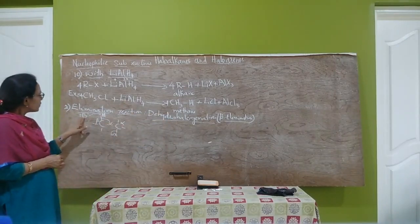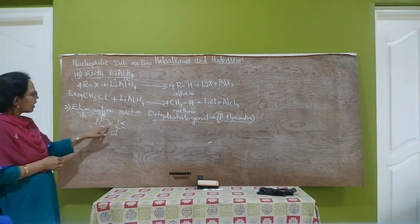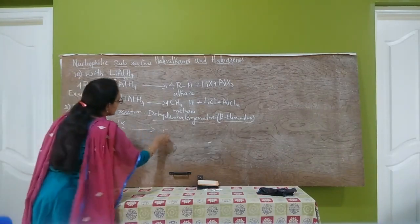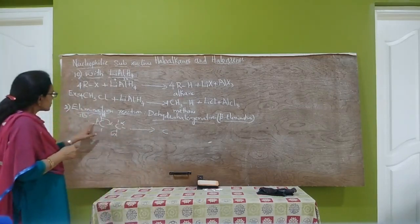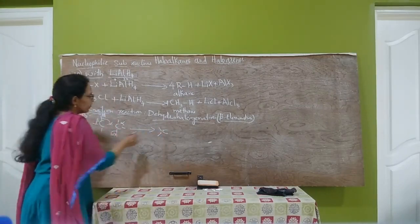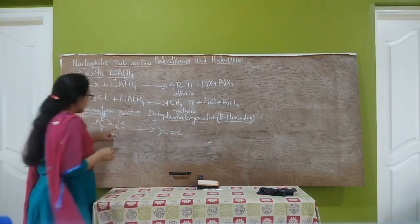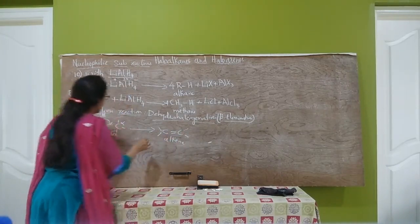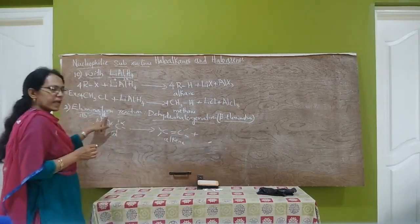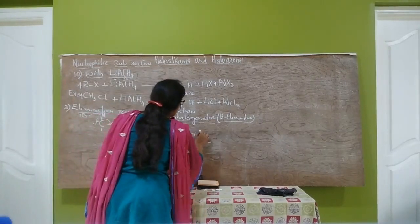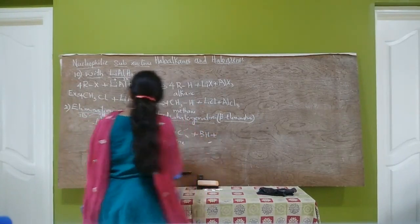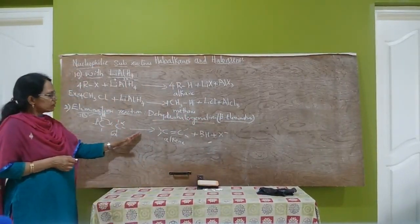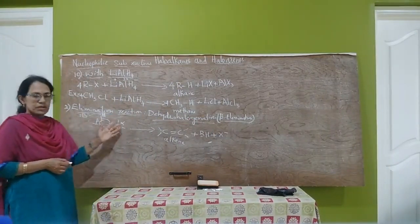When a base like KOH is heated with a haloalkane, the hydrogen is removed and a double bond forms while the halogen is removed, giving alkene as the product. The overall products are: alkene, plus BH (base with accepted proton), plus X minus. This is called dehydrohalogenation or beta elimination reaction.